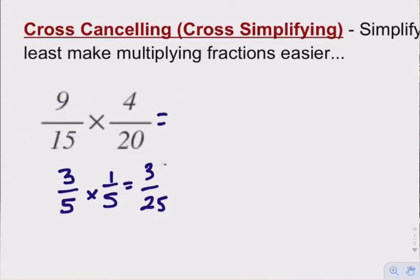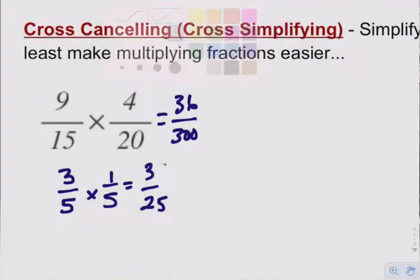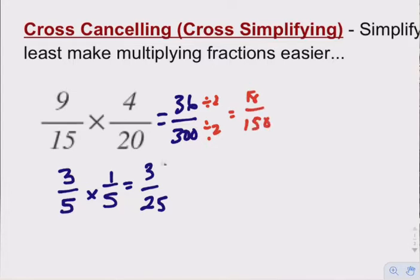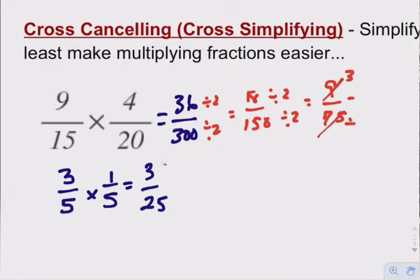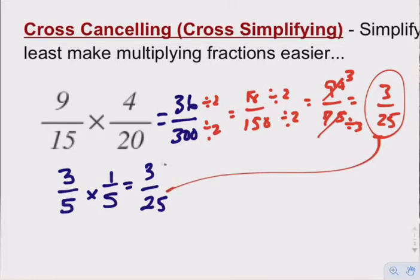If we didn't simplify first, look at what we'd have: 9 times 4 is 36, and 15 times 20 is 300. Then 36 and 300 are both even, divide by 2 to get 18 and 150. Those are both even, divide by 2 again. This process continues down to 9/75ths, and those are both divisible by 3, giving us 3/25. That's a lot of work to get somewhere we could have reached in one step by simplifying first.